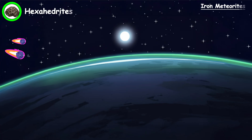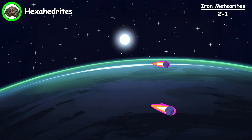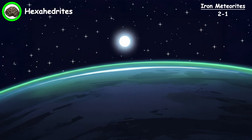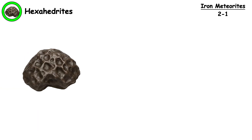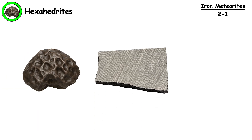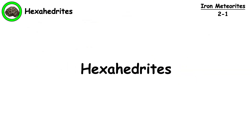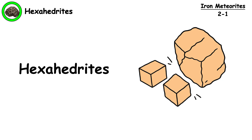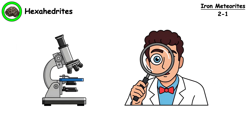Hexahedrites. Iron meteorites are the cores of planetesimals that never got the chance to become full planets. Hexahedrites are the simplest structural class of iron meteorites and contain relatively low amounts of nickel. But still, when etched with acid, they reveal straight parallel lines called Neumann bands. The name hexahedrite comes from how crystals can split along cubic crystal faces, though you need specialized equipment to see this clearly.